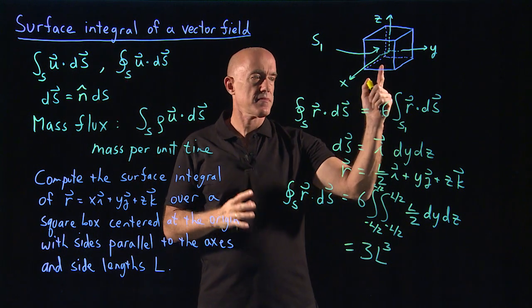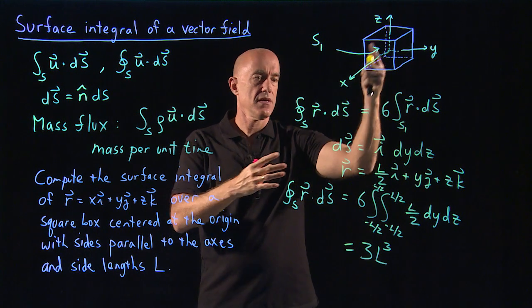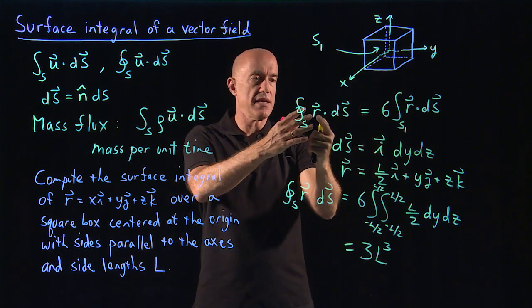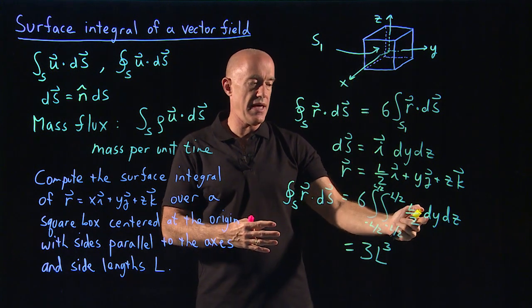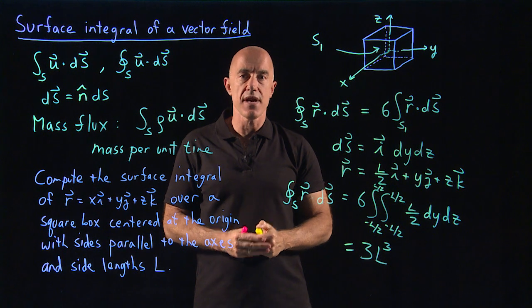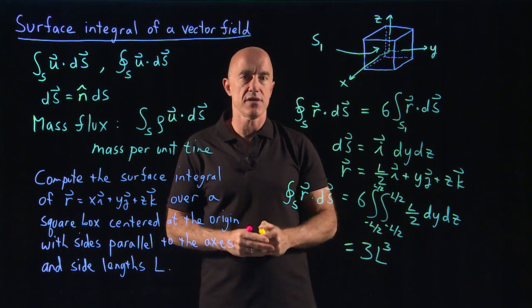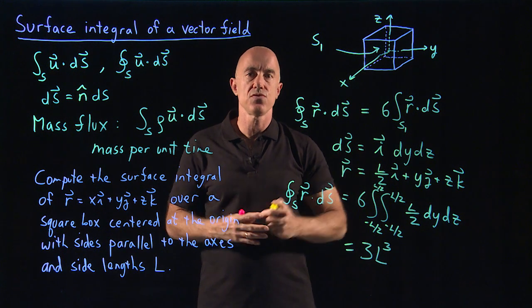So this surface integral, sometimes called a flux integral, is done by figuring out what is r dot ds and then converting it into a two-dimensional integration. A surface has two dimensions.